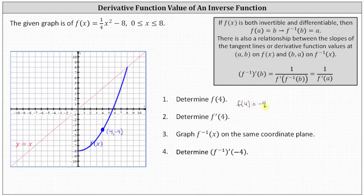Number two, we're asked to determine f prime of 4, which is equal to the slope of the tangent line at this point. To do this, we'll first find the derivative function, and then evaluate the derivative function at x equals 4. Given f of x, f prime of x is equal to the derivative of one-fourth x squared minus 8, which is one-fourth times the derivative of x squared, which is 2x, minus the derivative of 8, which is 0. Simplifying, we have one-half x. Therefore, f prime of 4 is equal to one-half times 4, which is positive 2.